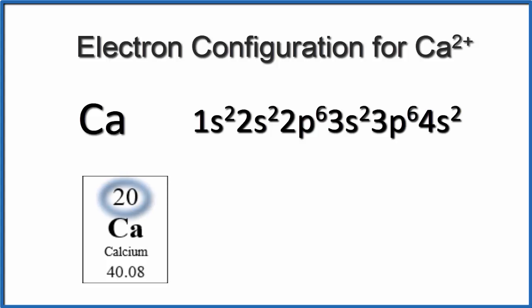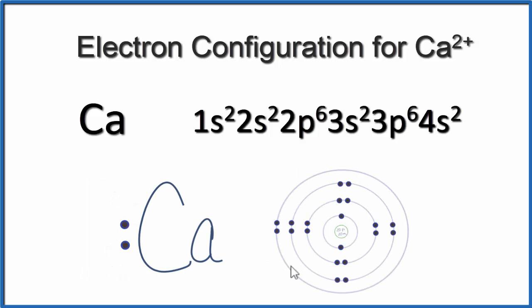Neutral calcium has 20 protons, and because it's neutral, that means it has 20 electrons. And we can write this notation here, this electron configuration, to show how they're distributed around the nucleus. So here's our Bohr diagram...